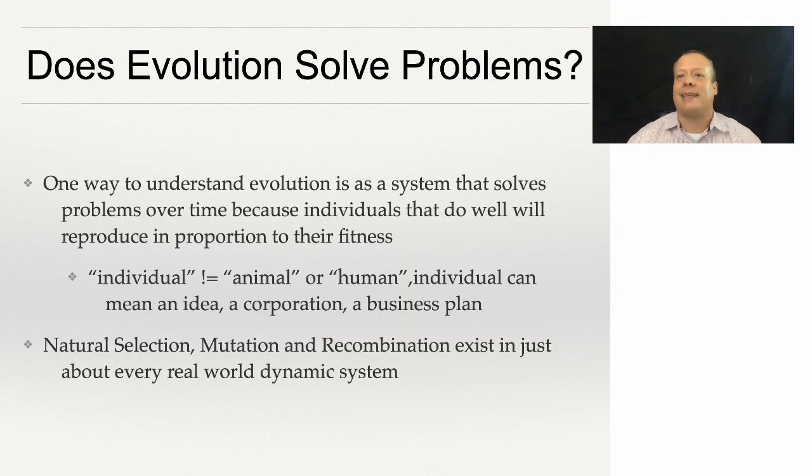Now, one question you might ask is, does that even make sense, right? Does evolution actually solve any problems? Well, one way to understand evolution is as a system that solves problems over time, because individuals that do well will reproduce in proportion to their fitness. Now, I should mention the individual in this context does not necessarily mean animal or human, though that's obviously what Darwin was talking about. And in fact, he didn't even say humans till later, but that gets a dual story, right?